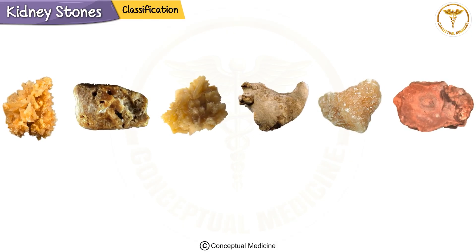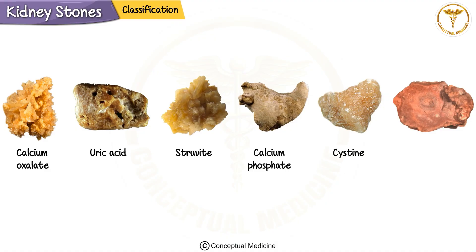Now let's move on to the classification of kidney stones. There are six main types: calcium oxalate, uric acid, struvite, calcium phosphate, cystine, and the rare xanthine stones. Each type has unique characteristics, so let's break them down one by one.